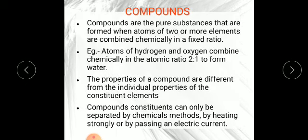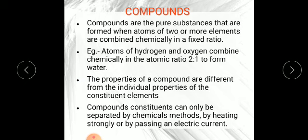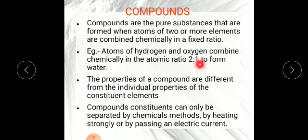Now, water is an example of a compound because water is made up of 2 different elements — hydrogen and oxygen. By definition, compounds are pure substances formed when atoms of 2 or more elements are combined chemically in a fixed ratio. The ratio for water is 2:1 — 2 hydrogen atoms combine with 1 oxygen atom to form water. Hydrogen is a gas and oxygen is a gas, but when they combine together they form water in a liquid state.